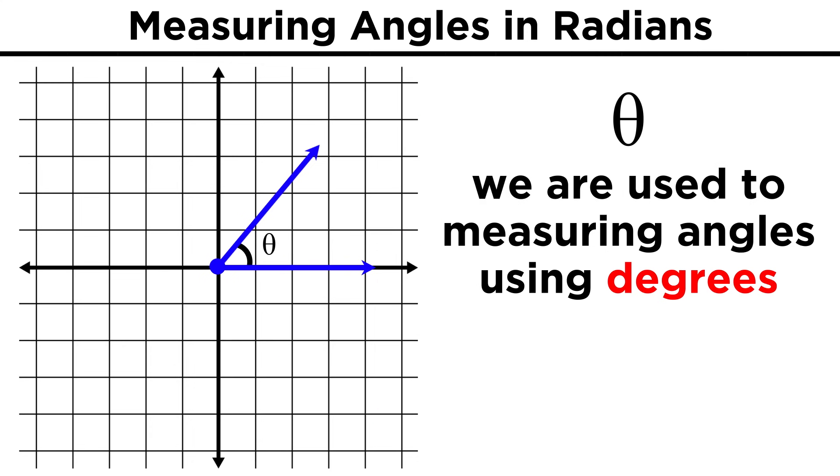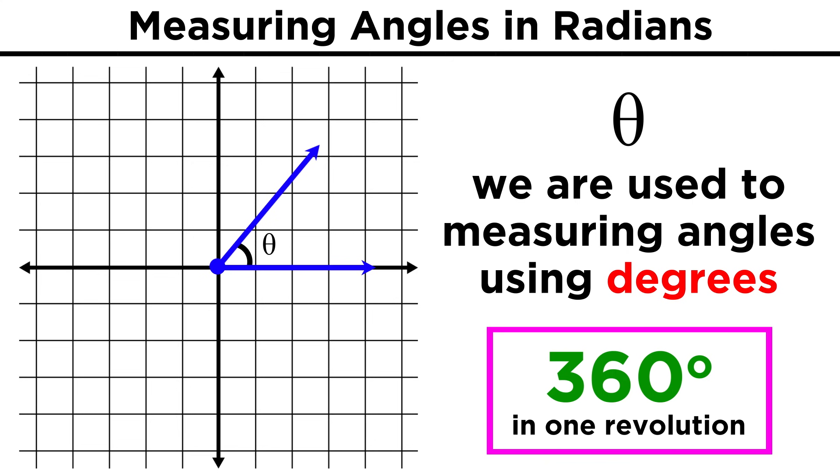Up until now, we have been measuring angles in degrees, and we know that there are 360 degrees in a circle, which is what we trace as we go all the way around the coordinate plane. Why 360?